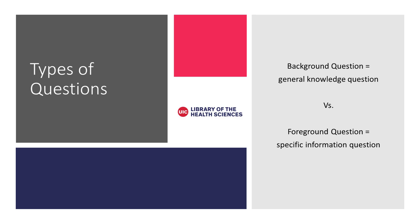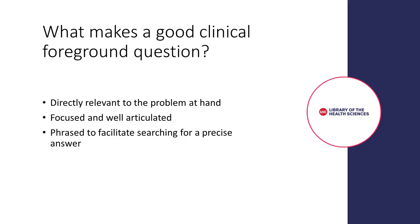Foreground questions are asking for specific information. These are questions where you are looking for answers to apply to a patient. The answers will help you with clinical decision making. Foreground questions are frequently complicated. They are directly relevant to the problem at hand, focused and well-articulated, and phrased to facilitate searching for a precise answer. These qualities will help you to find the exact information needed amongst the millions of articles available.